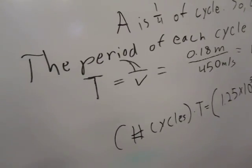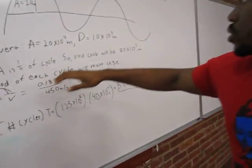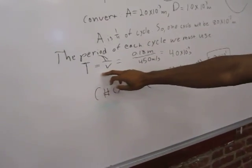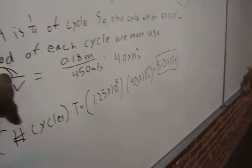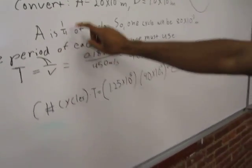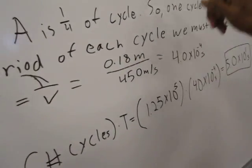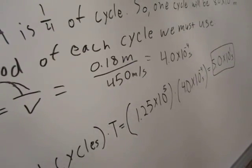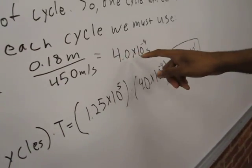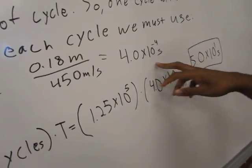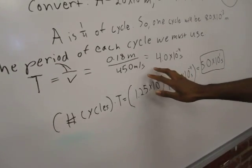Next we wanted to figure out the period of each cycle that we're going to use. In order to do that, we use this formula T equals wavelength divided by velocity. So we have 0.18 meters divided by our velocity, which is 450 meters per second, which comes out to be 4.0 times 10 to the negative four seconds. This is the amount of time it's going to take for us to get through one cycle.